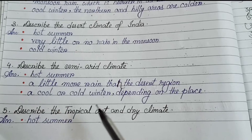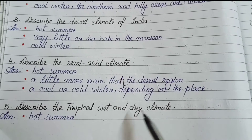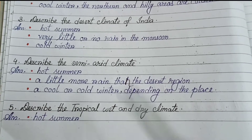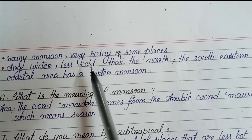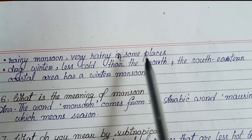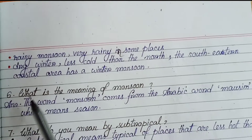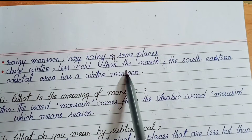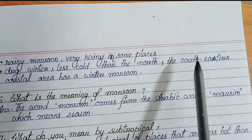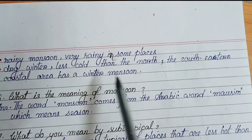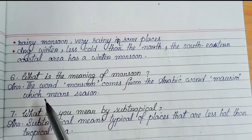Number 5: describe the tropical wet and dry climate — hot summer, rainy monsoon, very rainy in some places, dry winter, less cold than the north. The southeastern coastal area has a winter monsoon.